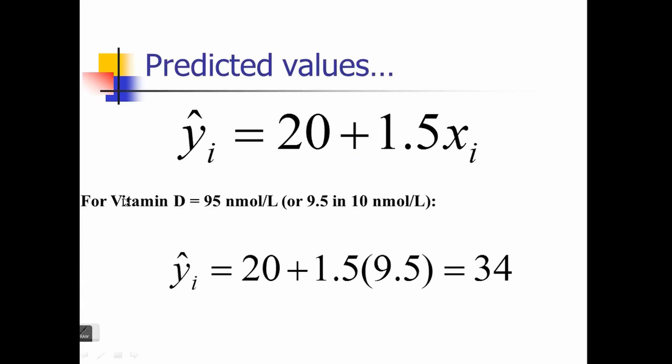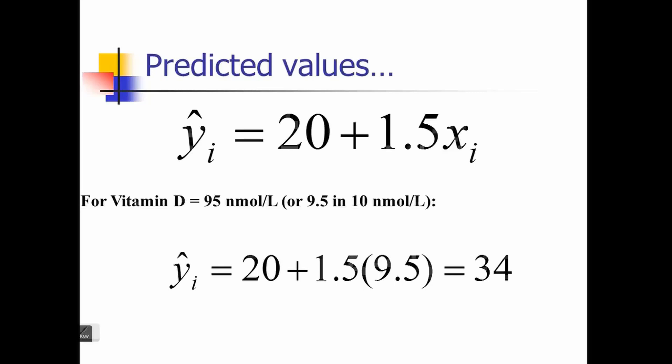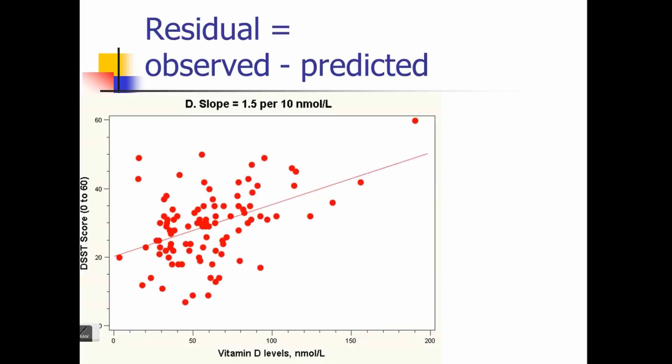Similarly, you calculate that for all the observations. Here you can see the predicted value is 34, but the actual value is different, maybe 45 or something. So you take the difference, the perpendicular difference, and that's the error. You do that for all observations.